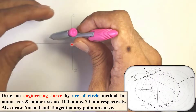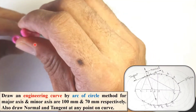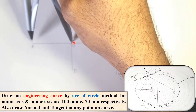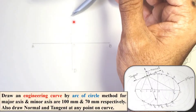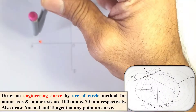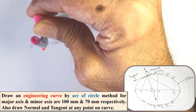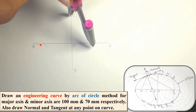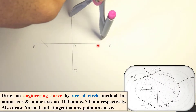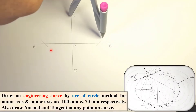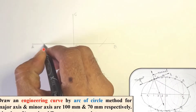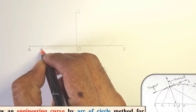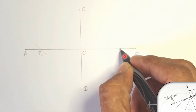Now take the compass and set the radius exactly equal to OA. Draw an arc with C as the center on the AB line, on both sides. This gives you points F1 and F2 — label them as F1 and F2. These are the two foci of the ellipse.